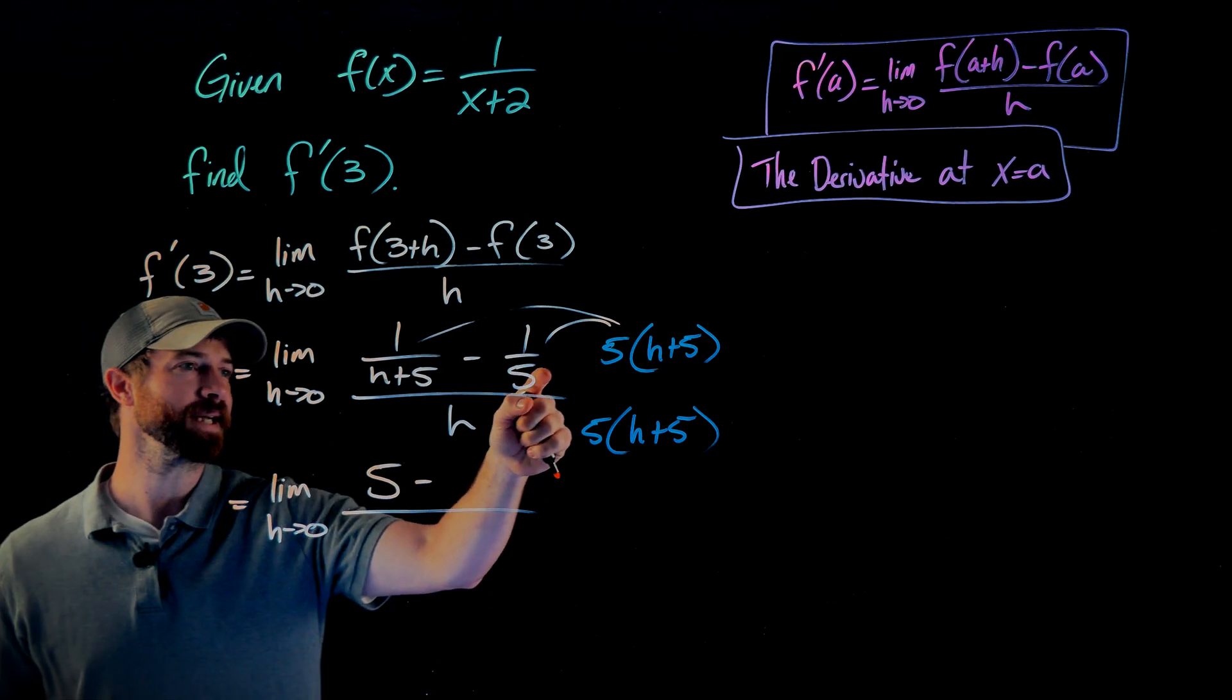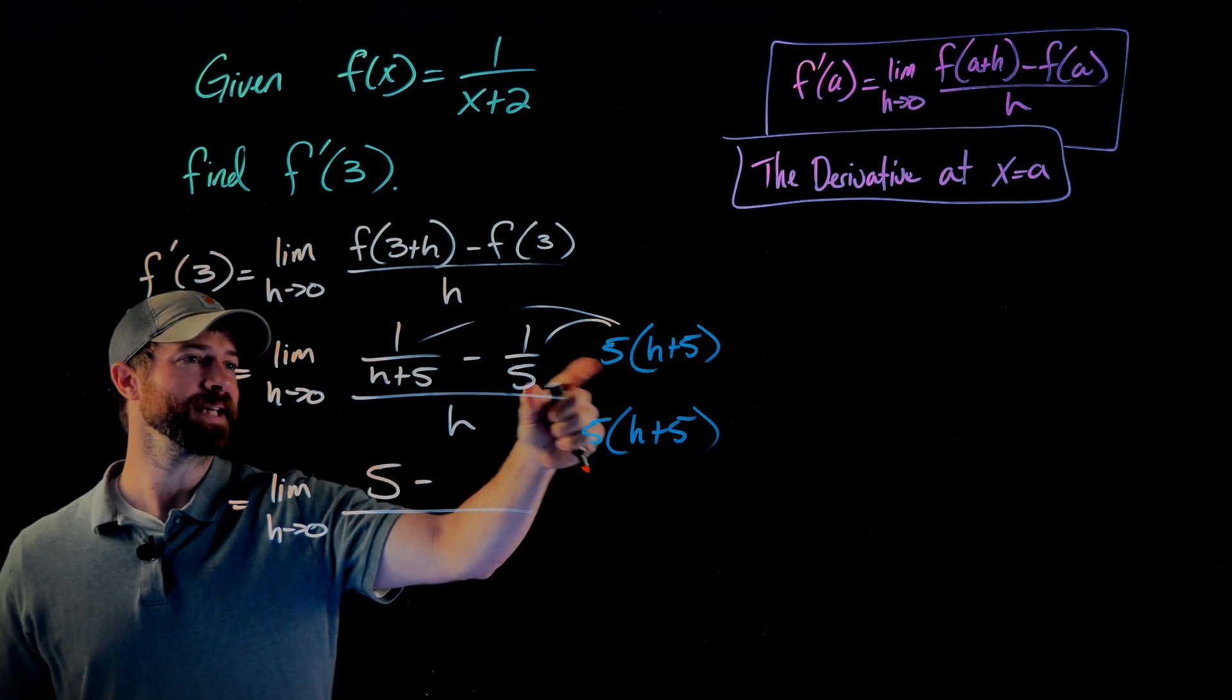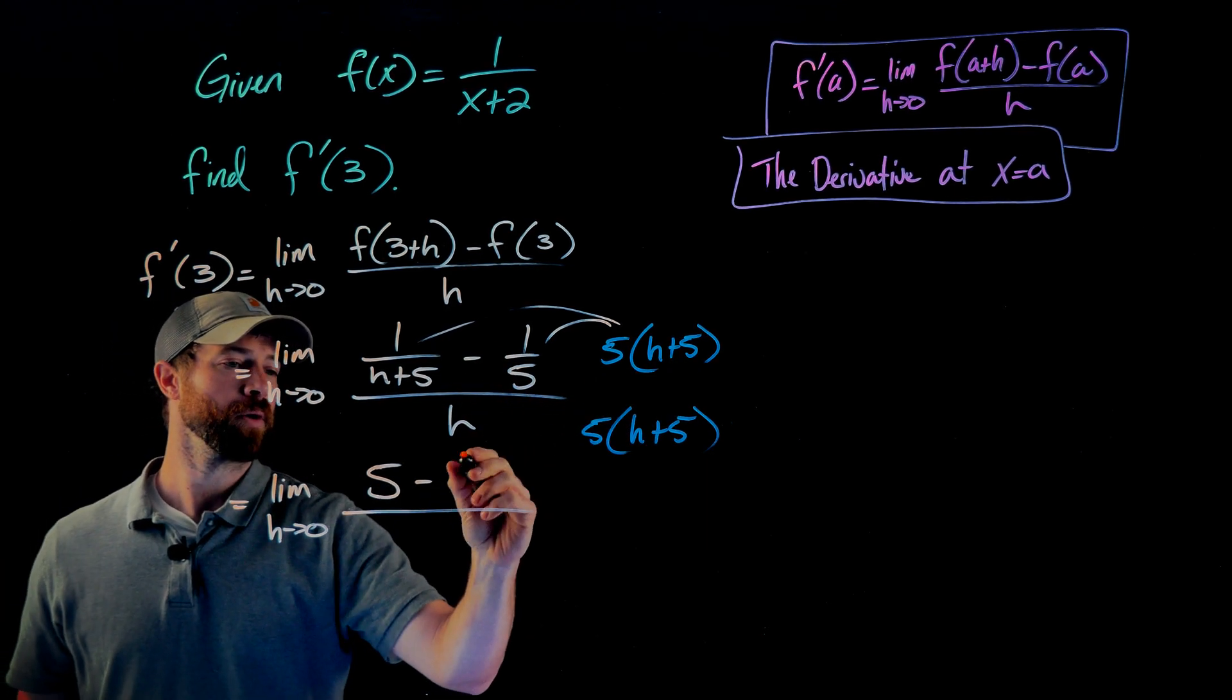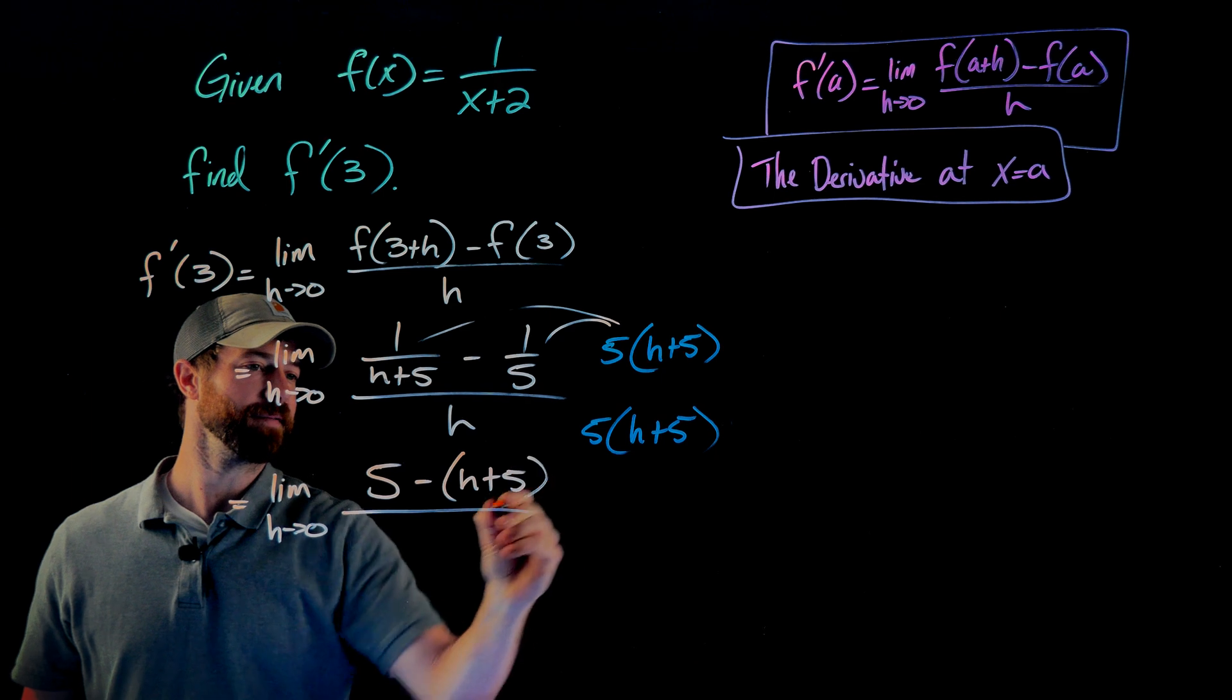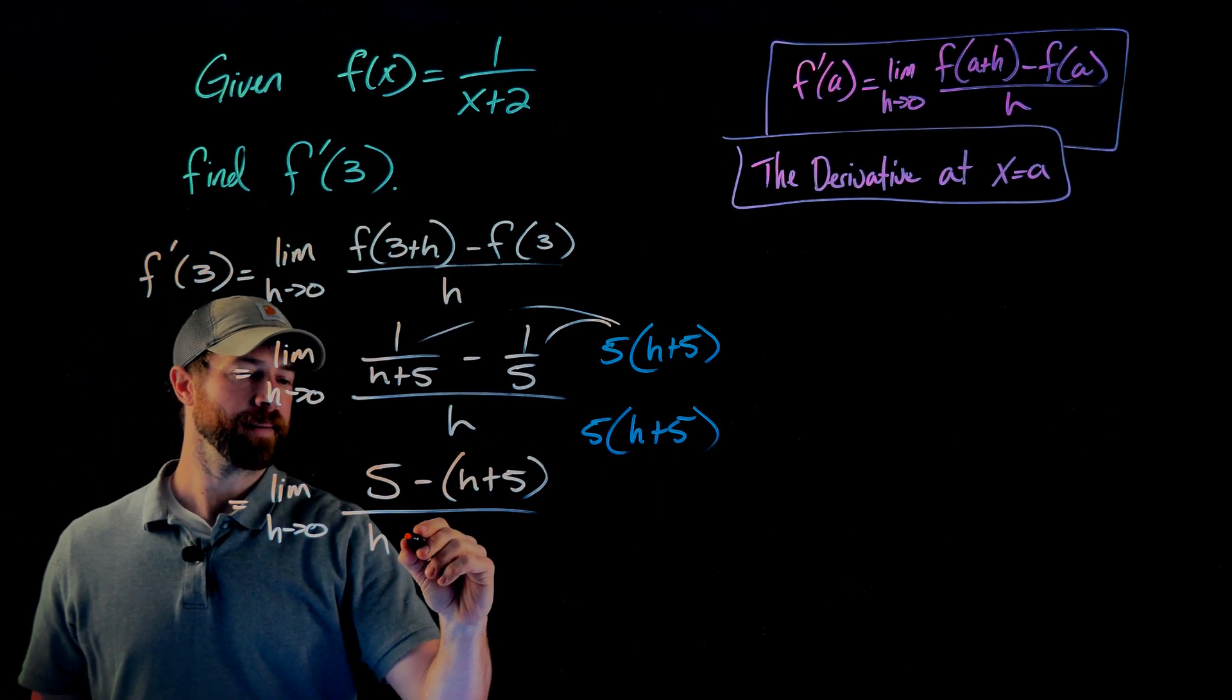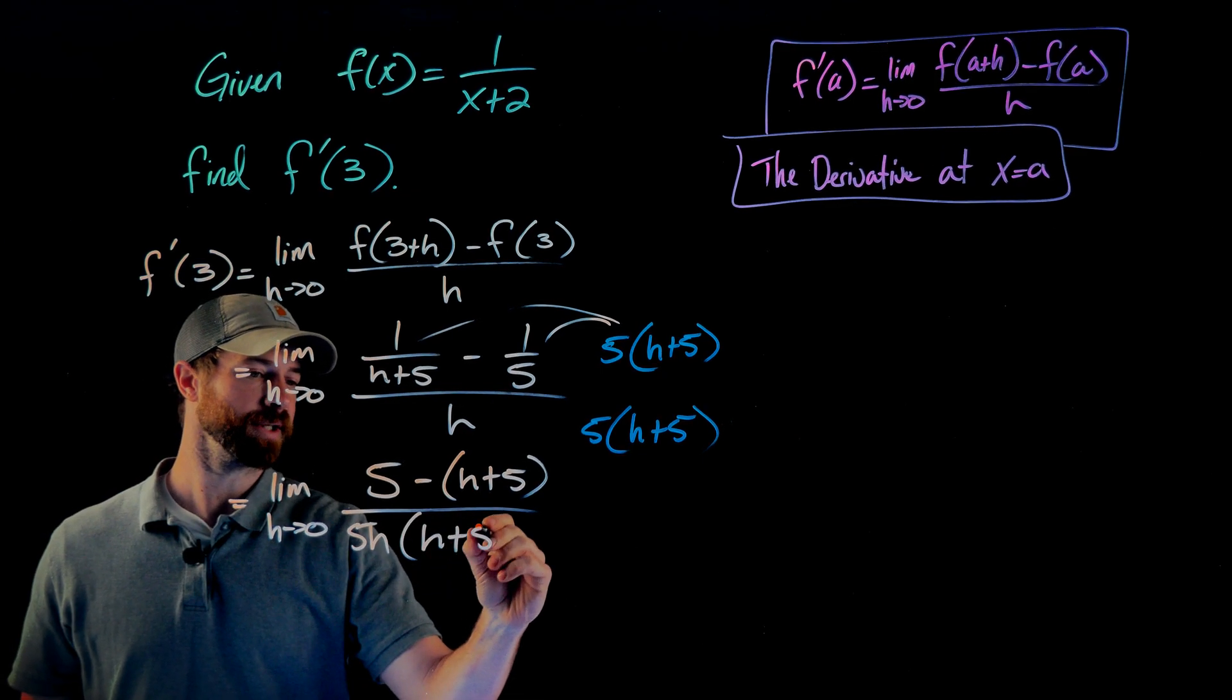And the same thing happens in the second term. The 5s will cancel when I multiply these together, and I'm just going to be given negative 1 times the h plus 5, or really just h plus 5 here in parentheses. Down here in the denominator, I'm just going to multiply this stuff together. I'm actually not going to expand it. Let's just do 5h times h plus 5.